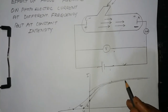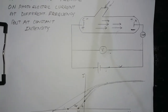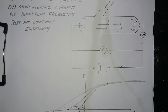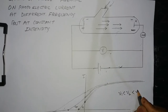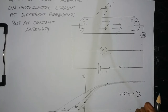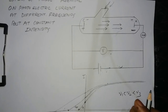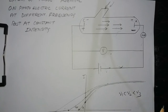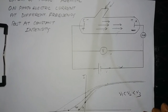When frequency is increased from ν₁ to ν₂ to ν₃ — where ν₁ < ν₂ < ν₃ — there is no change in the saturation current but there is an increase in the stopping potential. This means that photoelectric current is independent of the frequency of light, while stopping potential is directly proportional to the frequency. Therefore, the kinetic energy of the photoelectrons is also directly proportional to the frequency of incident light.